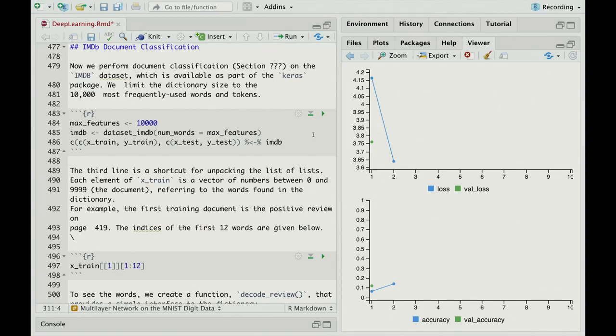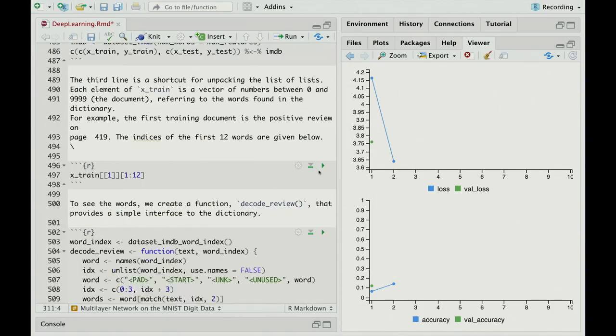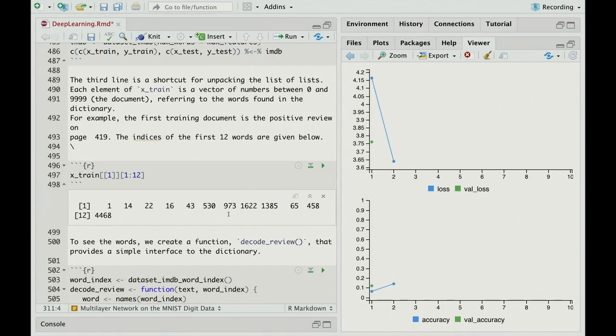Where we score each document for whether or not the words in our dictionary appear in the document. It's a binary vector, and we're going to limit it to the 10,000 most commonly used words in the dictionary. When we extract the data set, we can straight away indicate that, and it'll truncate each review to just using those words. This third line here is a shortcut using an assign operator that takes the IMDB data structure and builds up a train and test list and also X and Y. So these are shortcuts we learned from the Keras book. Let's have a look at the indices for the first 12 words in the first document. So there they are. The words are indicated by positions in the dictionary.